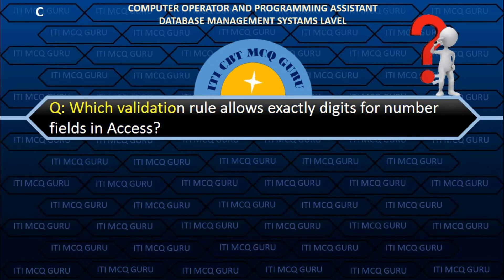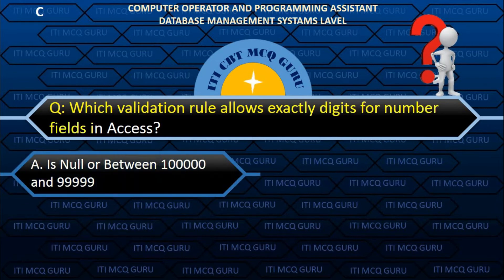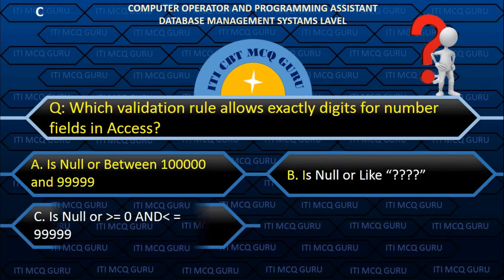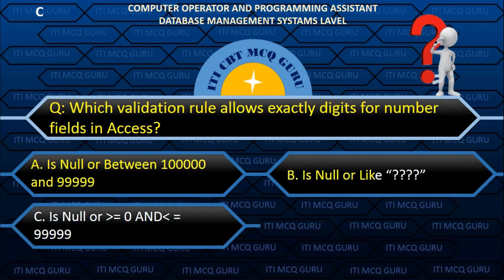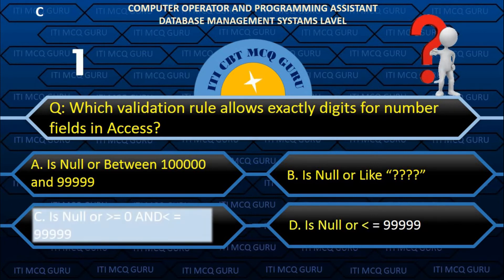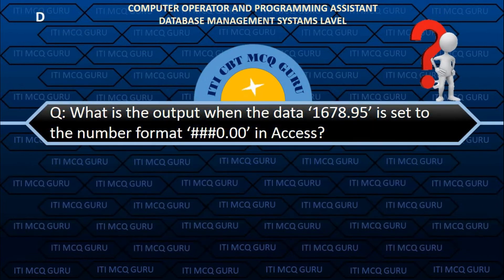Which validation rule allows exactly 5 digits for number fields in Access? C. Is Null Or (>= 0 And <= 99999).